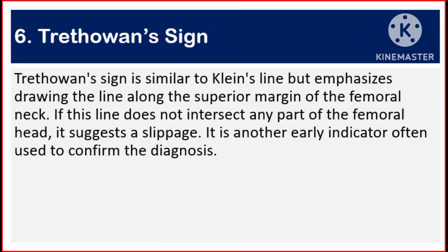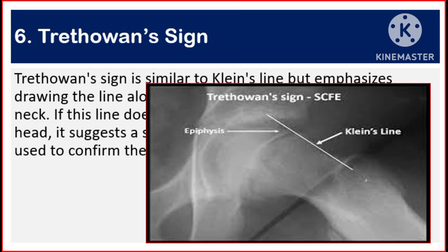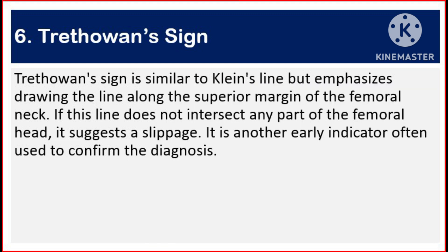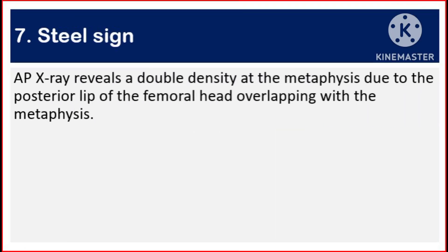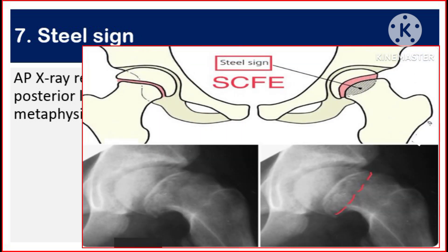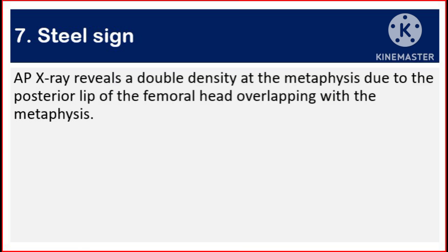Number six: Trethowan's sign. Trethowan's sign is similar to Klein's line but emphasizes drawing the line along the superior margin of the femoral neck. If this line doesn't intersect any part of the femoral head, it suggests a slippage. It is another early indicator often used to confirm the diagnosis. Number seven: Steel sign. The anteroposterior X-ray reveals a double density at the metaphysis due to the posterior lip of the femoral head overlapping with the metaphysis.